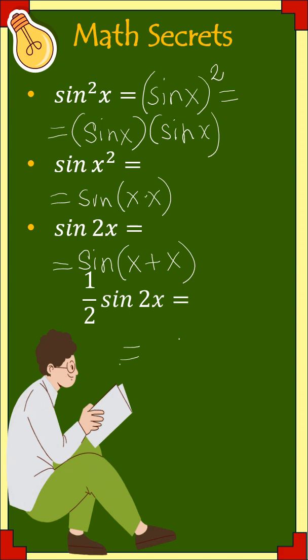It is multiplication. So we can write it like one half times sine 2x over 1 equals sine 2x over 2.